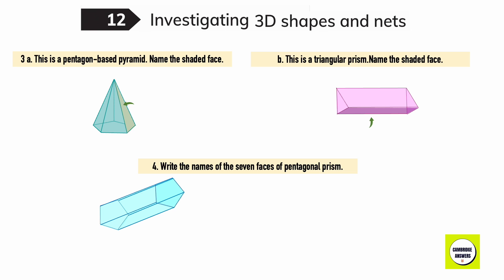This is a pentagon-based pyramid. Name the shaded face: triangle. This is a triangular prism. Name the shaded face: rectangle. Write the names of the seven faces of this pentagonal prism: pentagon, pentagon, rectangle, rectangle, rectangle, rectangle, rectangle.